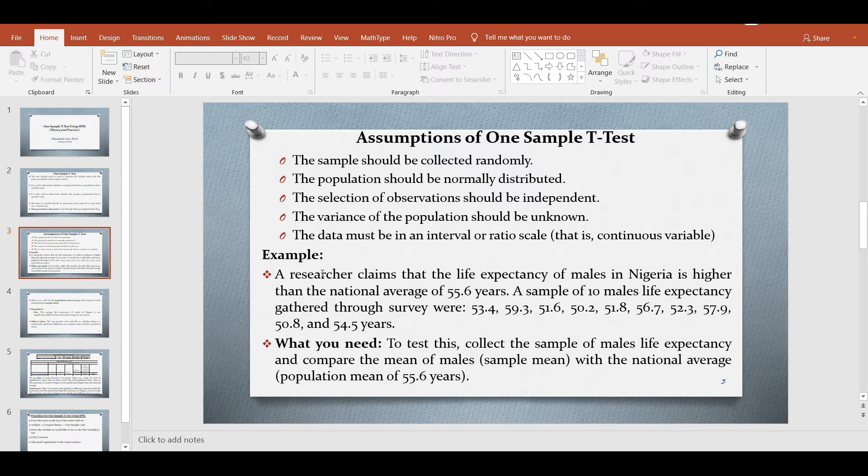Suppose we have this example here to be tested using one sample t-test. A researcher claims that the life expectancy of males in Nigeria is higher than the national average of 55.6 years. A sample of 10 males life expectancy gathered through survey: 53.4, 59.3, 51.6, 50.2, 51.8, 56.7, 52.3, 57.9, 50.8 and 54.5 years.